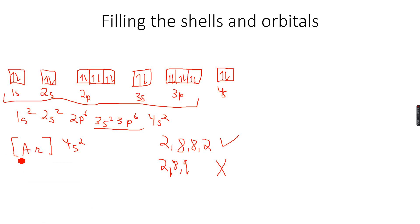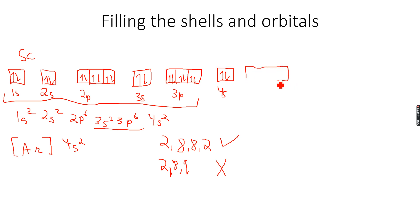Now let's look at scandium (Sc). Scandium has 21 electrons, which is one more than calcium. After 4s is full, we have to go to the 3d subshell. The 3d subshell has 5 orbitals, so we place the first electron into 3d¹.